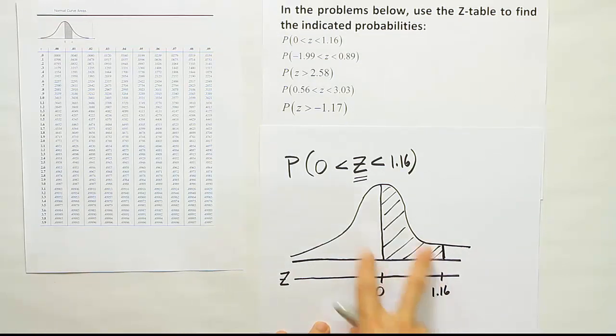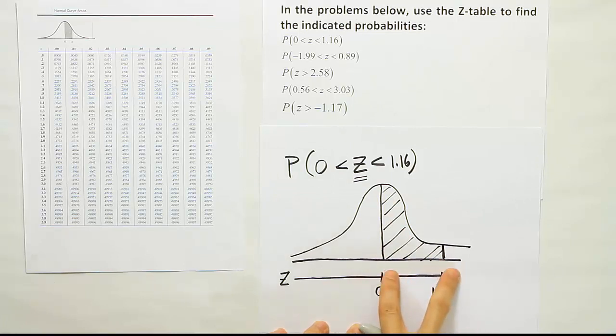Now this is the steps that we do. We have the statement. We draw a picture that illustrates what we're looking for. And then we shade the desired region on this curve. Once we've done that, it's time to go to the table and find the area.